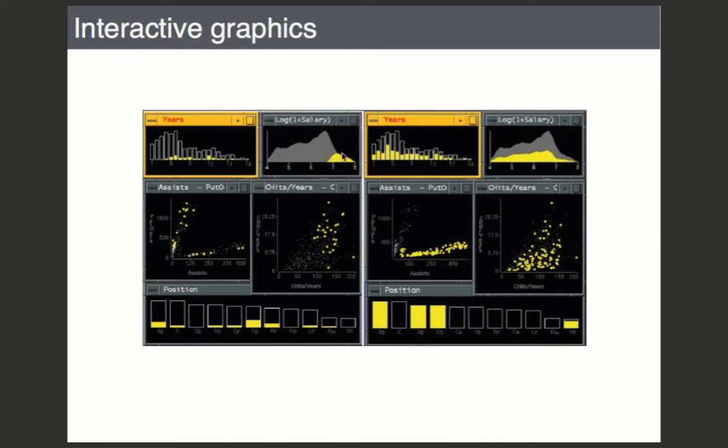So all of these plots are linked in this example. This is not a live example, this is a screenshot, but it lets you take a look at the subset of this data. So the yellow highlighted region, the data here corresponds to the highlighted bits here in these scatter plots and in these bars here.